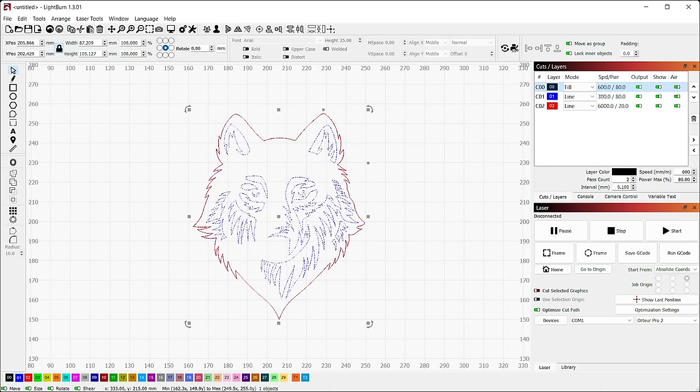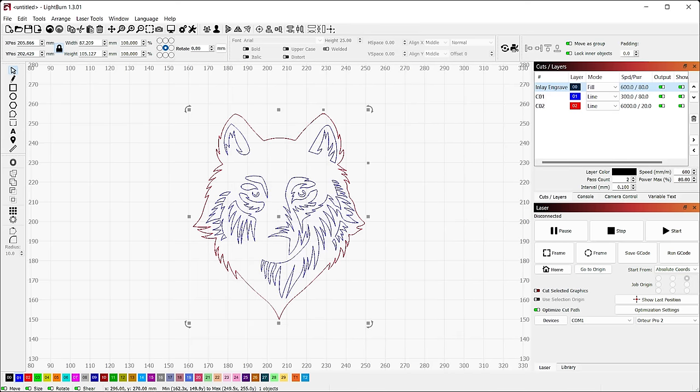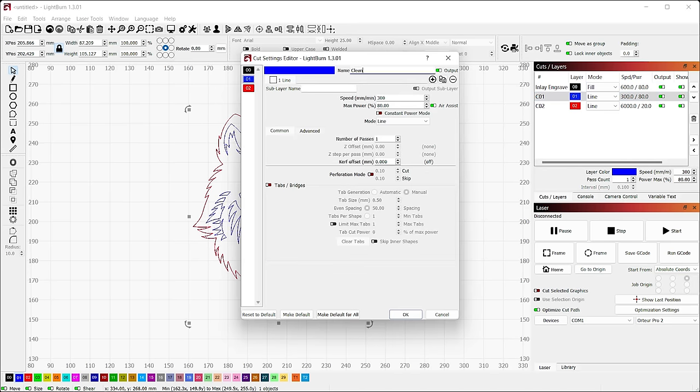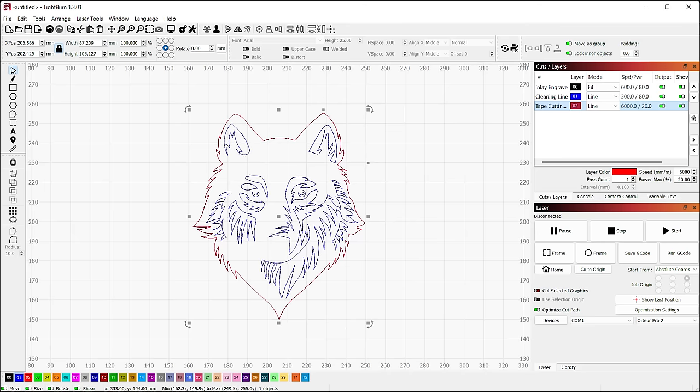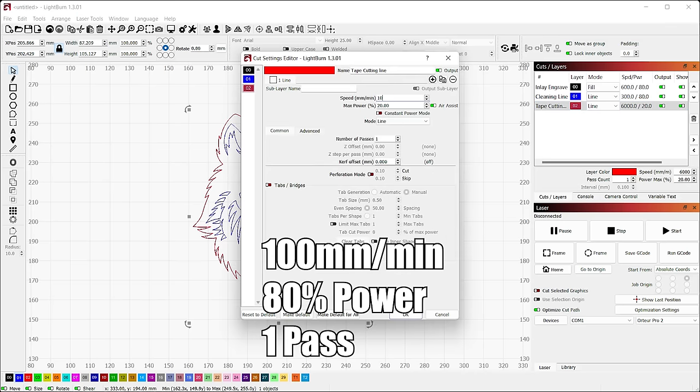It's going to cut just the outside. We want to fill first, and actually, it also helps to label your layers so you know what's going on. This is going to be our cleaning line, and then finally, tape cutting line. Our tape cutting line is way too fast. I ran mine at 100 millimeters per minute at 80% power.